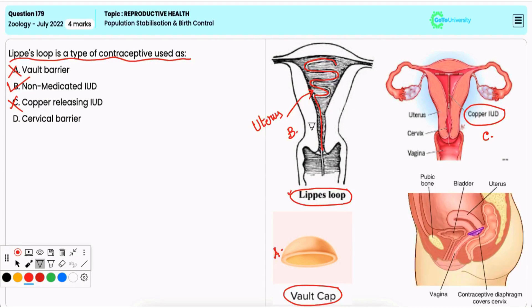Option D: cervical barrier. It is incorrect. A cervical barrier like a diaphragm blocks sperm entry, but Lippes loop is an intrauterine device, not a cervical barrier.